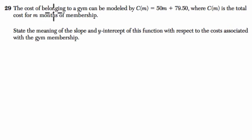Okay, let's read the question. It says that the cost of belonging to a gym can be modeled by this equation, C of m equals 50 times m plus 79.50.